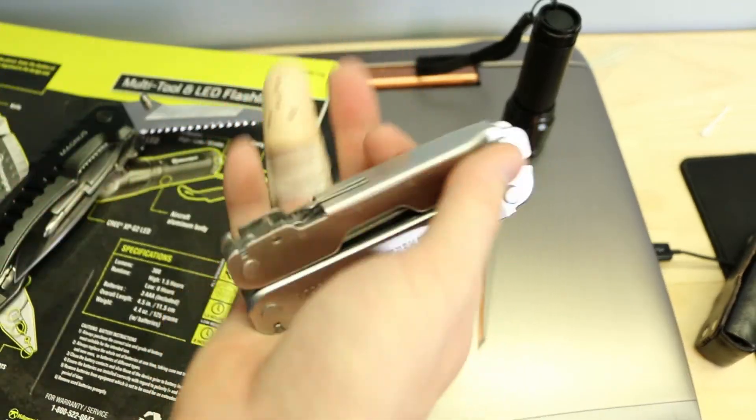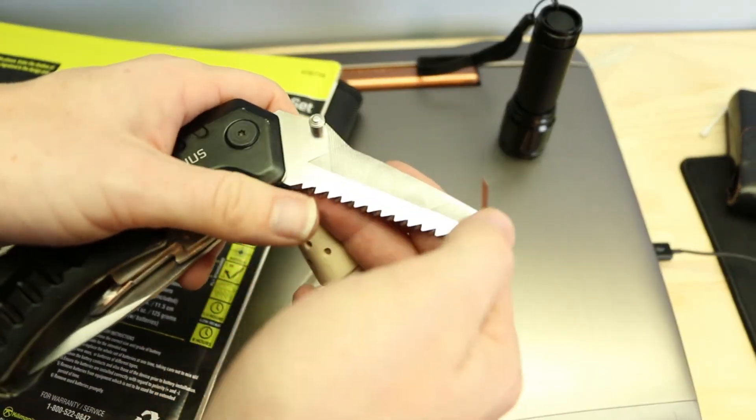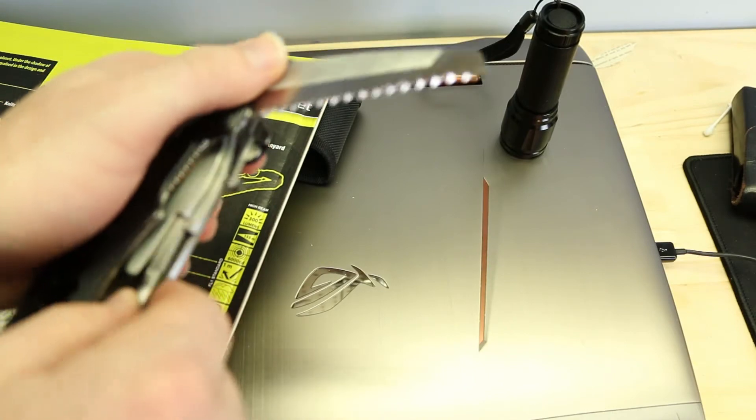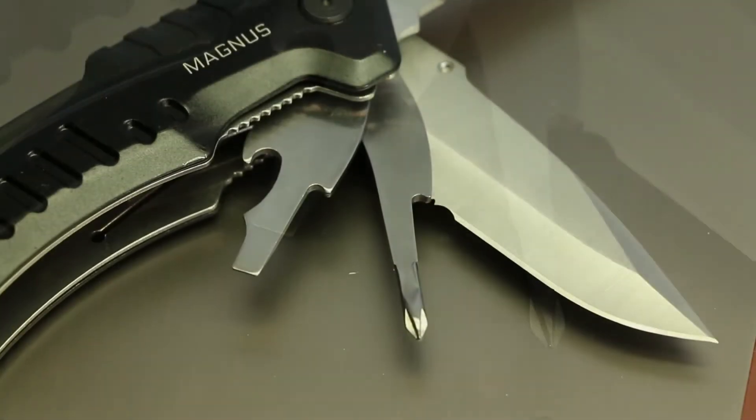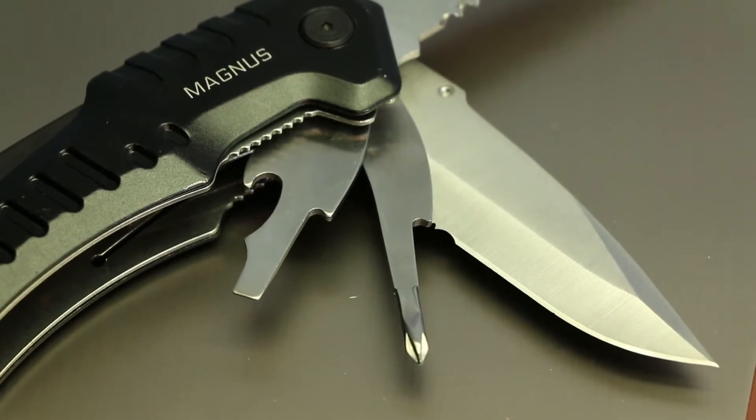Probably get a replacement part for that. Yeah, and the saw blade's also got that file on the side for when you want to do your nails, because you've got to do your nails. It's got a Phillips head and a flat head as well with a can opener there. Not bad. Not bad at all.